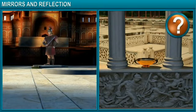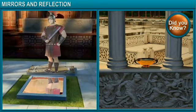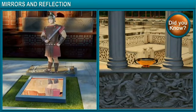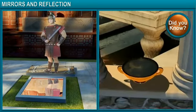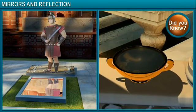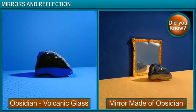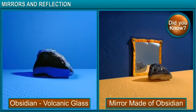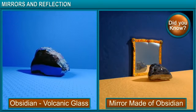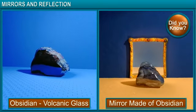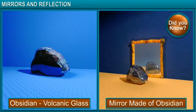Did you know? In ancient times, people mostly used pools of still water or water collected in a vessel as mirrors. The first man-made mirrors were in the form of a polished stone made using obsidian, a naturally occurring volcanic glass.